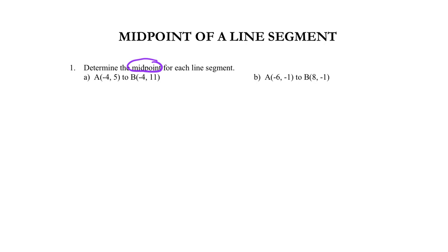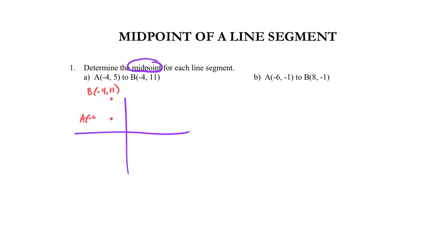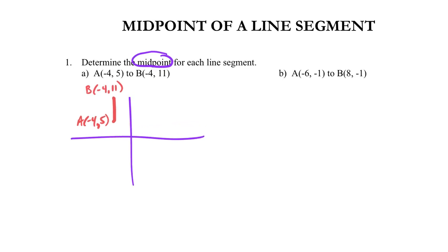Okay, we're back. If I tackle problem A, I might be motivated to draw a quick set of axes and plot both points. I noticed I'm at negative 4, 5 and negative 4, 11, so I've got to get all the way up to 11 on my sketch. Point B is up here at negative 4, 11 and point A is here at negative 4, 5. There is my line segment — a quick sketch to help me through the problem.